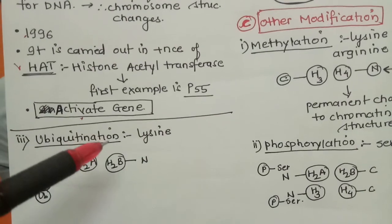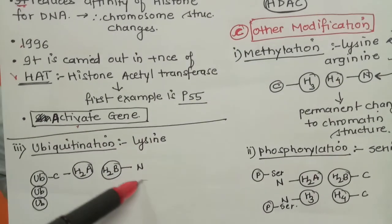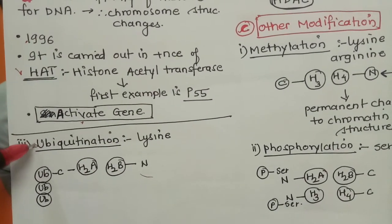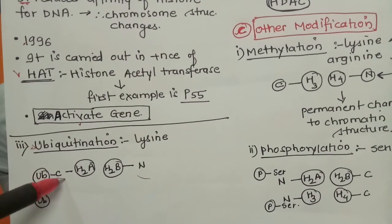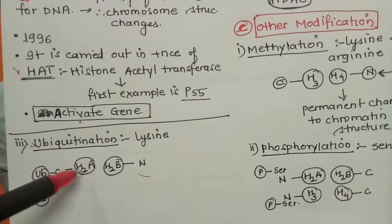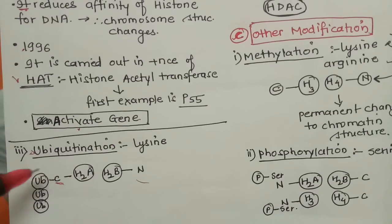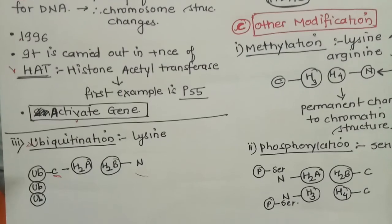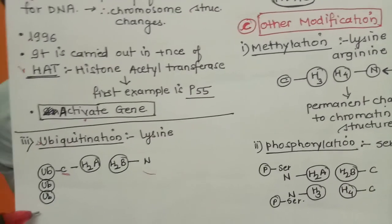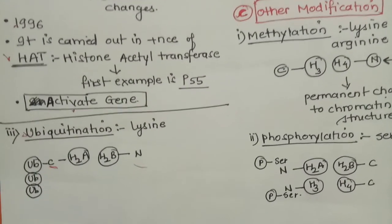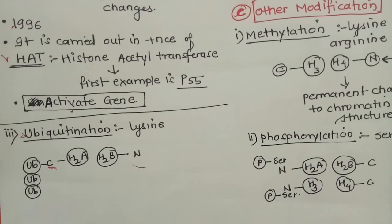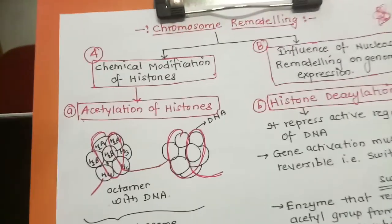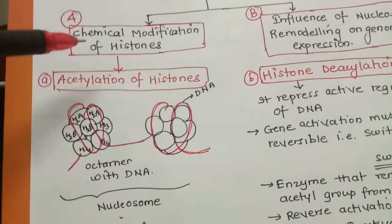So far all the modifications we studied were occurring at the N-terminal. Remember: ubiquitination is the only modification occurring at the C-terminal end of H2A and H2B. On the lysine residues at the C-terminal of these two histones, the ubiquitin group is added, which either activates or inactivates those histones, thereby modifying the structure of the chromosome. So this is about chemical modification of histones - acetylation, deacetylation, and other modifications including methylation, phosphorylation, and ubiquitination.